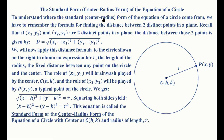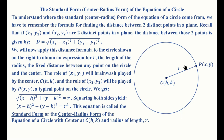In order to understand where the center-radius form comes from, we have to remember the distance formula, which gives us the distance between any two points in a plane. For two general points (x₁, y₁) and (x₂, y₂), the distance formula — obtained using the Pythagorean theorem — is d equals the square root of (x₂ minus x₁) squared plus (y₂ minus y₁) squared. We apply this to a circle with center at (h, k) and radius r, where P is any general point on the circle.